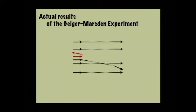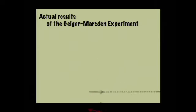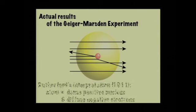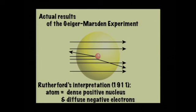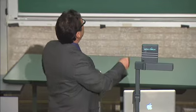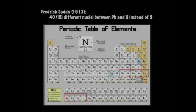It took a couple of years for Rutherford to figure out what was happening. What he eventually realized was that there was a very dense positive nucleus inside the atom, and then diffuse negative electrons orbiting around that positive nucleus. All of a sudden, those elements now have different parts — they have nuclei, and they have electrons.